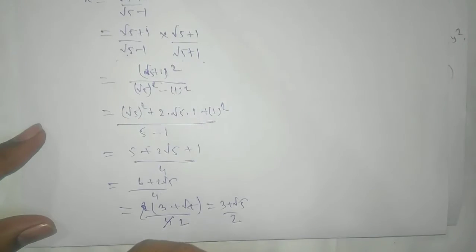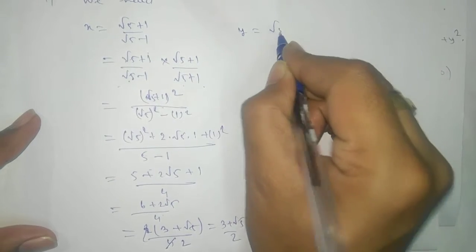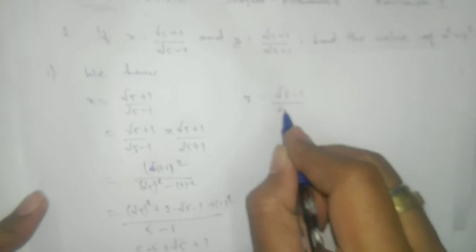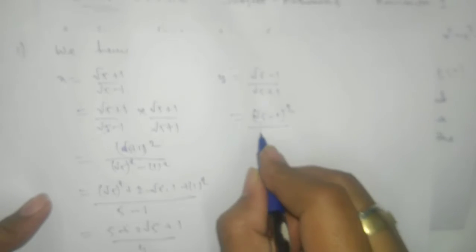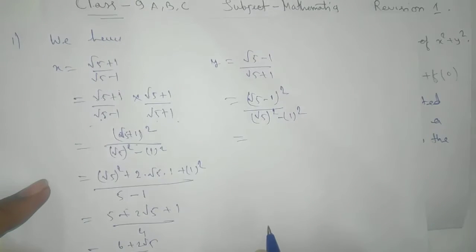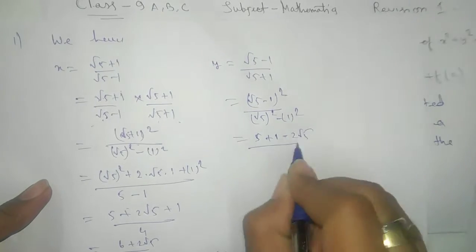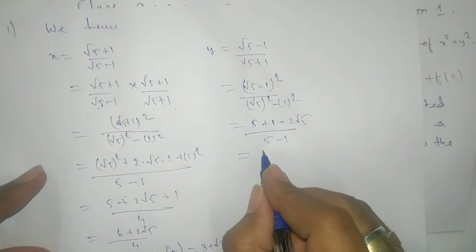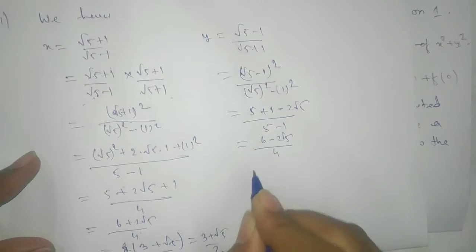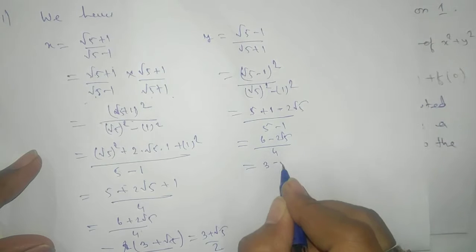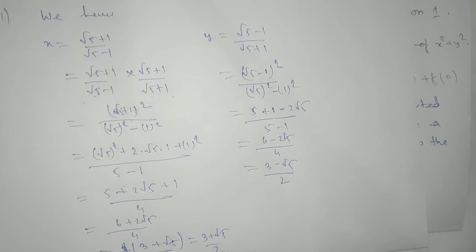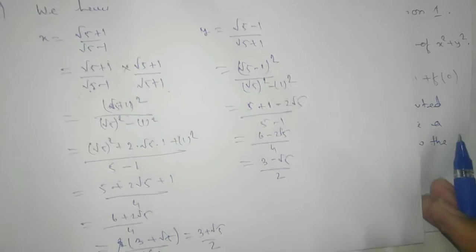Now y equals root 5 minus 1 by root 5 plus 1. We can directly write (root 5 minus 1) whole square over (root 5 squared minus 1 squared). Using the formula a squared plus b squared minus 2ab, the numerator gives 6 minus 2 root 5, and dividing by 4 we get 3 minus root 5 by 2. Very small steps — we can see this directly.